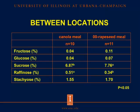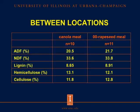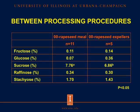For carbohydrates, the concentration of monosaccharides in meal from different locations showed that fructose and glucose were not different, but sucrose was greater in 00 rapeseed meal from Europe. For oligosaccharides, raffinose was greater in canola meal, but stachyose was not different. For fiber, the concentrations of ADF, NDF, lignin, hemicellulose, and cellulose were not different between canola meal and 00 rapeseed meal. For carbohydrates in rapeseed products from different oil extraction procedures, sucrose was greater in 00 rapeseed meal from solvent extraction, but other monosaccharides and oligosaccharides were not different.